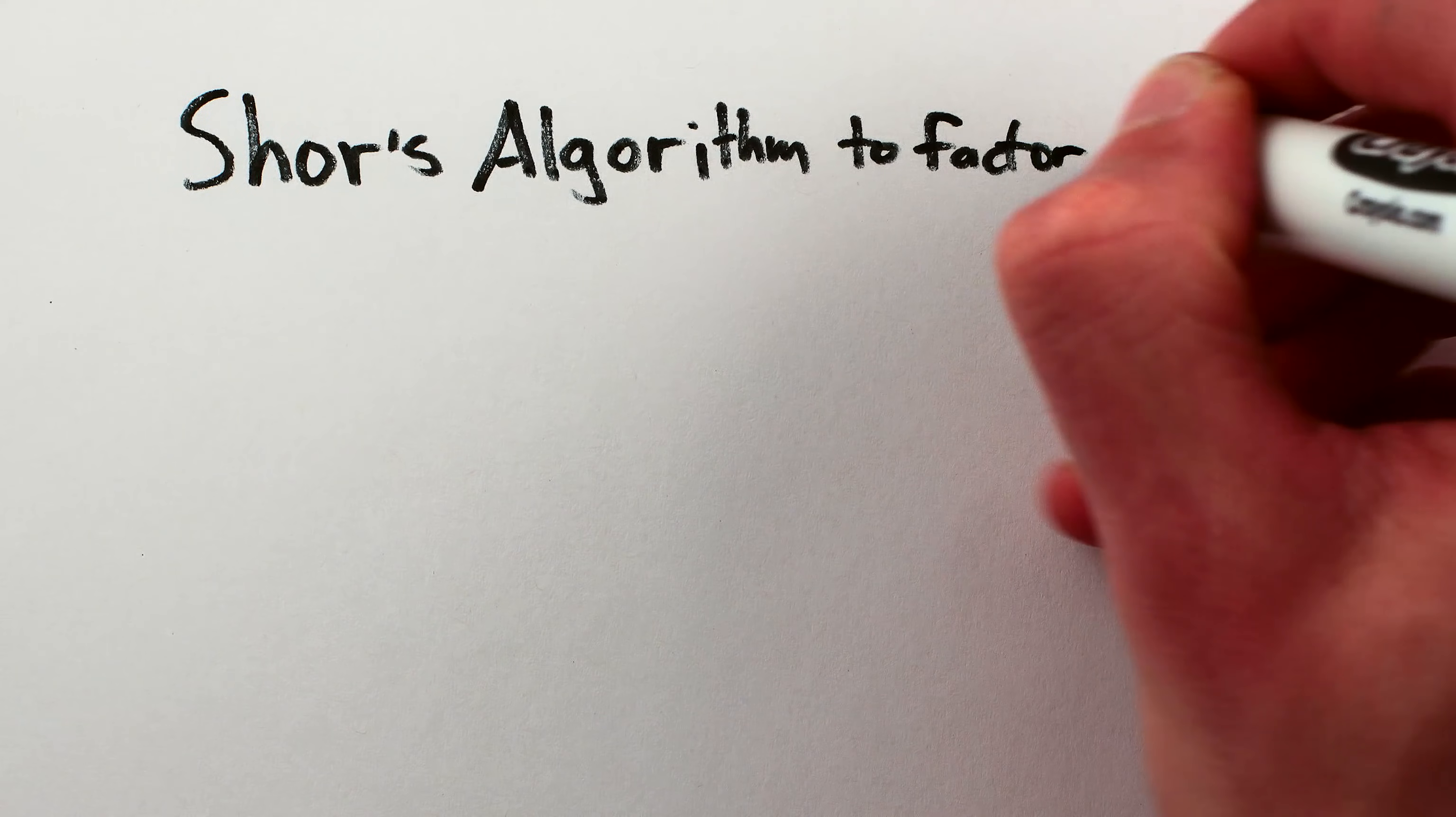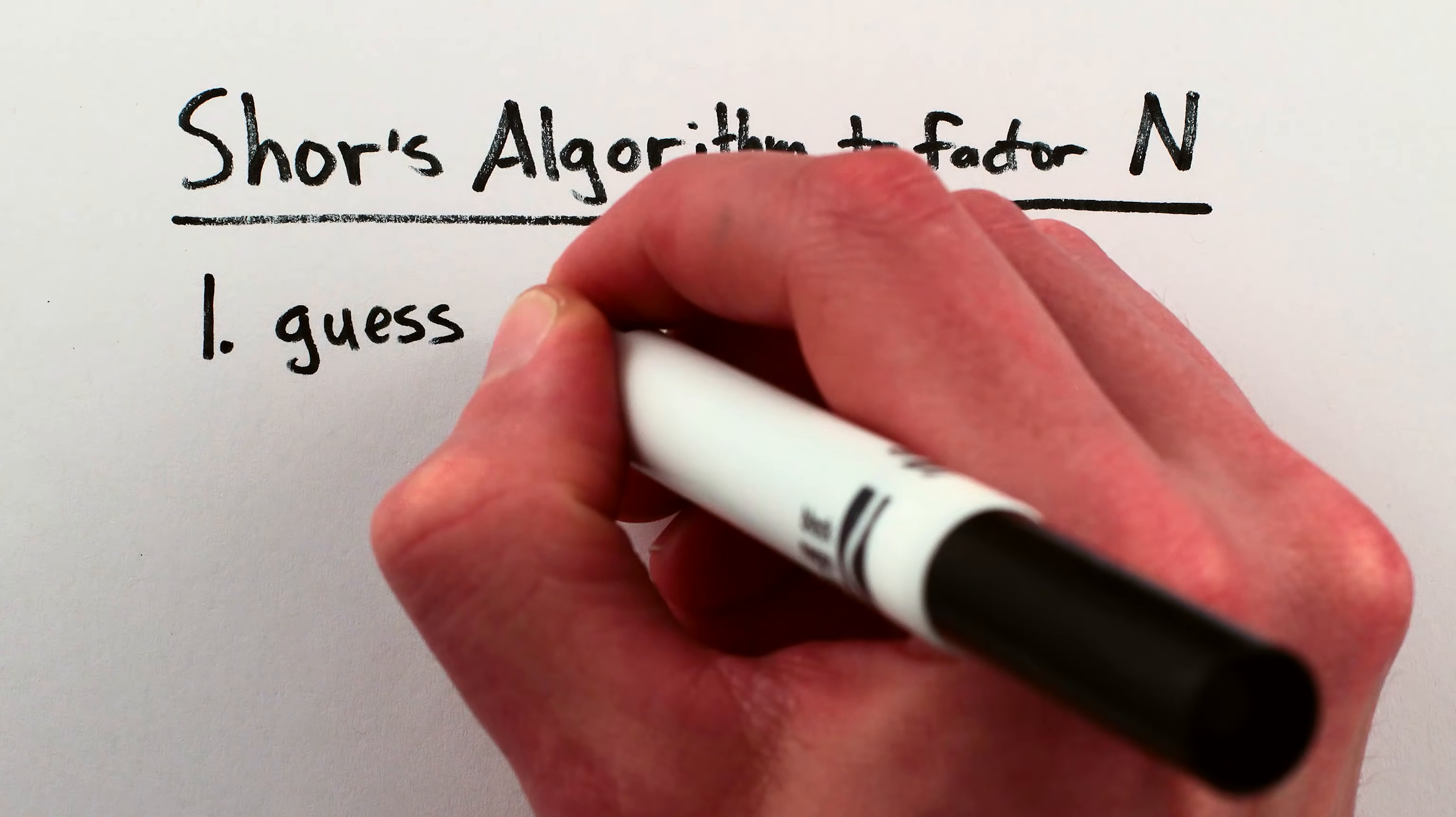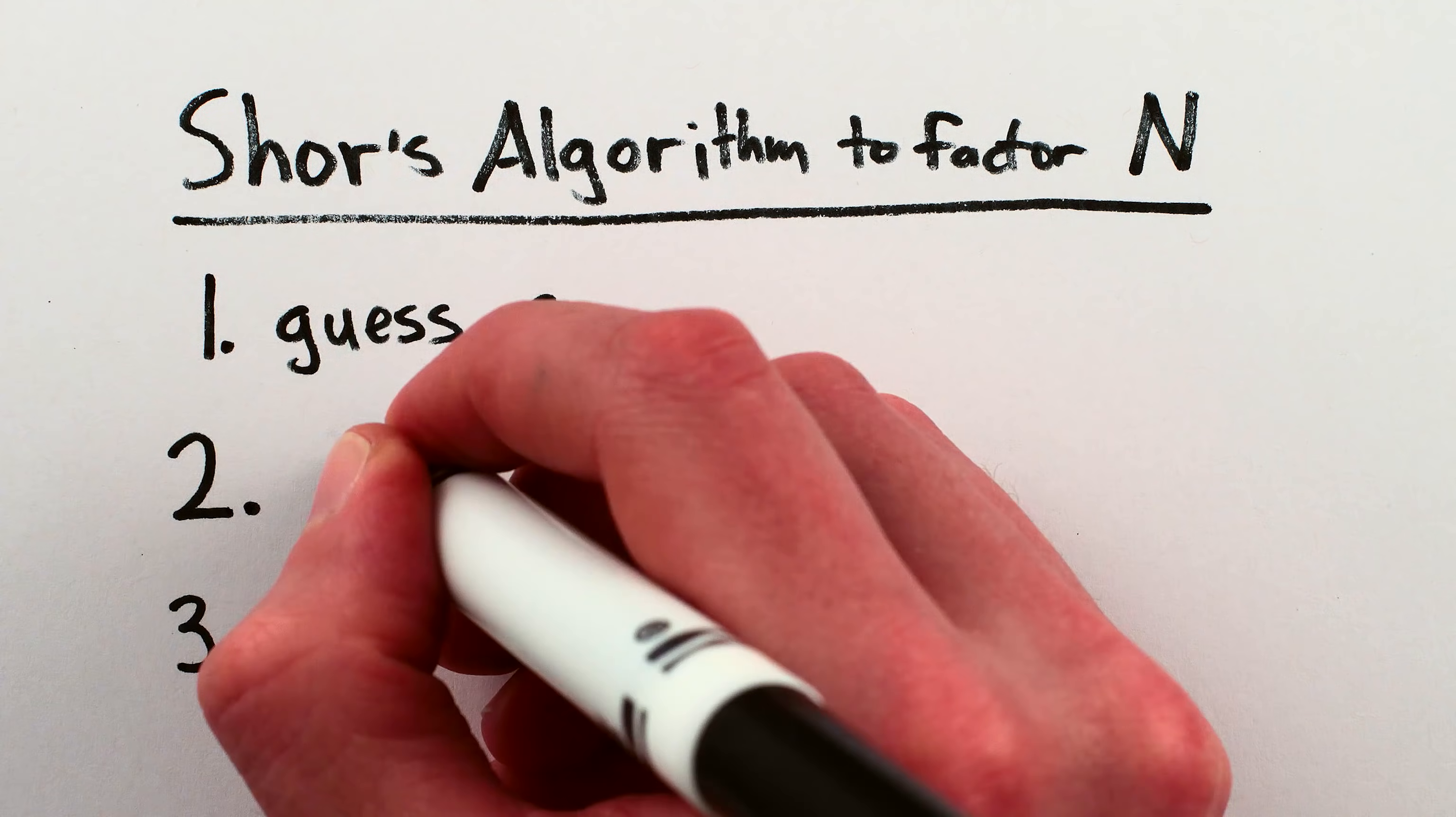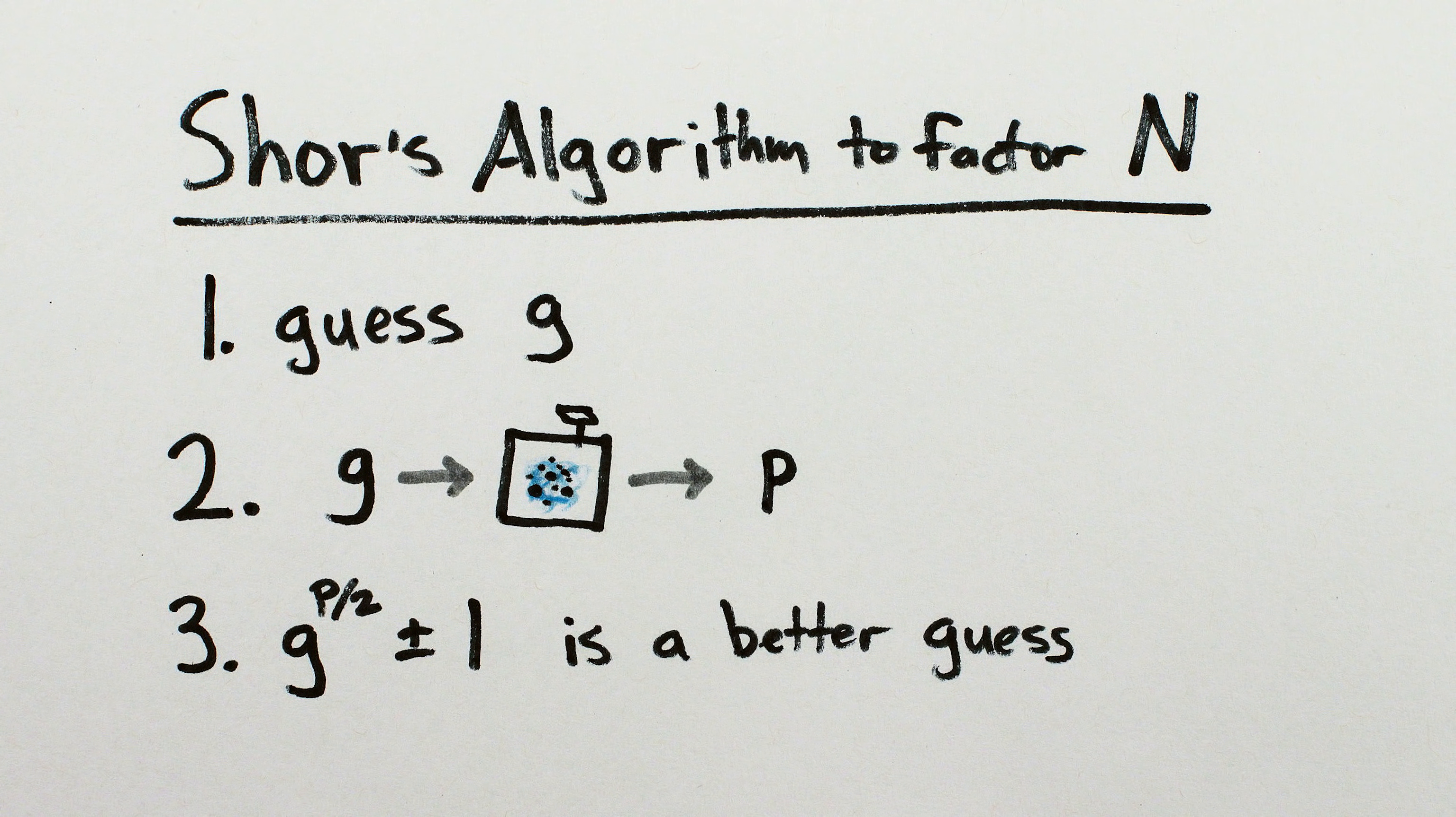As a refresher, here's a rough overview of how Shor's algorithm factors large numbers quickly. For any crappy guess at a number that shares factors with n, that guess to the power p over 2 plus or minus 1 is a much, much better guess, if we can find p. And we can find p almost immediately with a single, if complex, quantum computation.